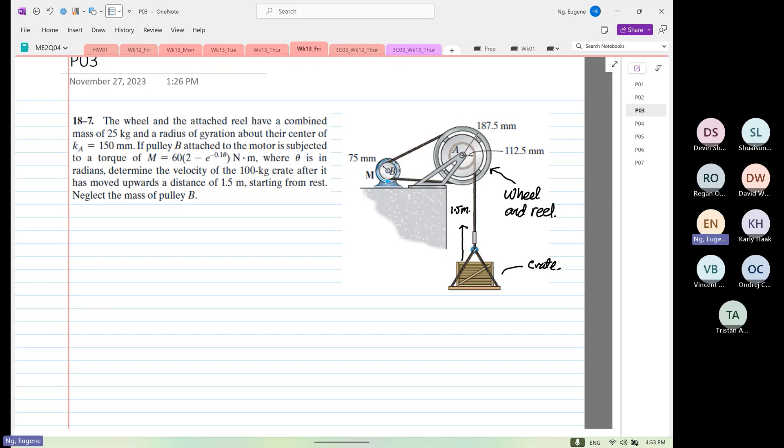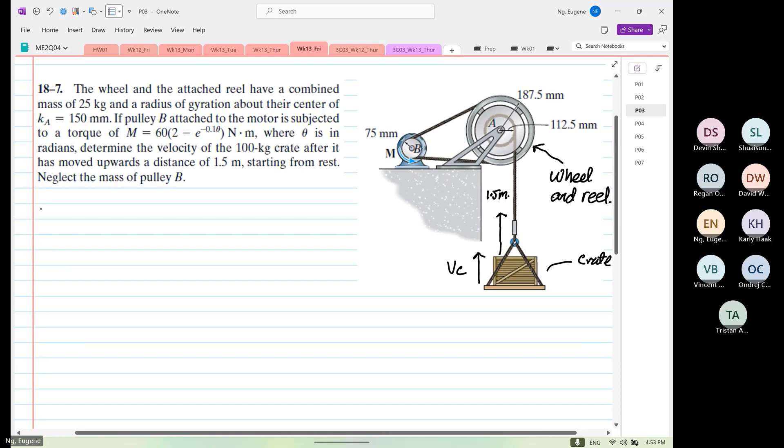Neglect the mass of the pulley at point B. So at the end of the day we want to predict velocity. So we would like to determine velocity of the crate and we call it VC.